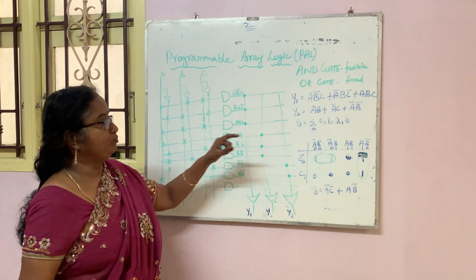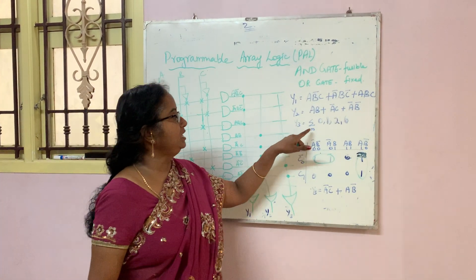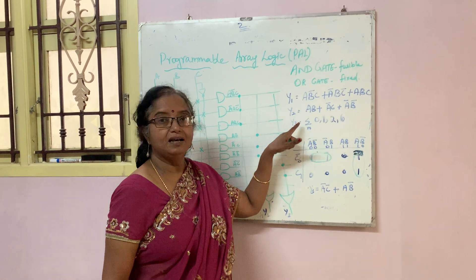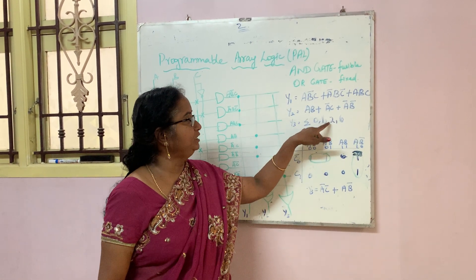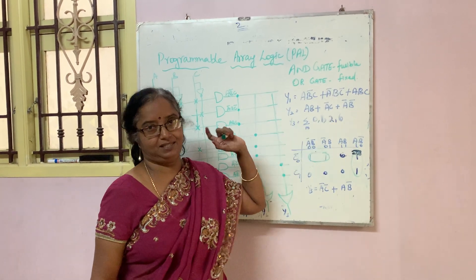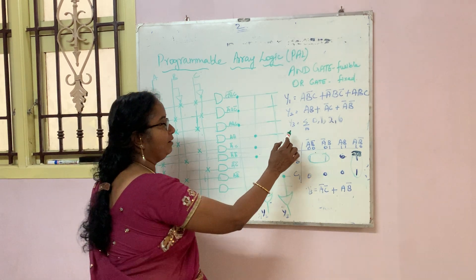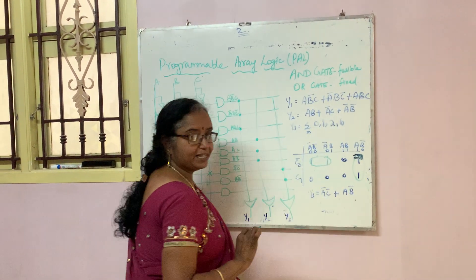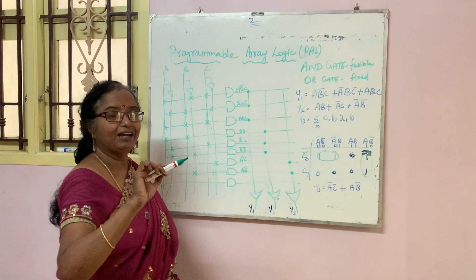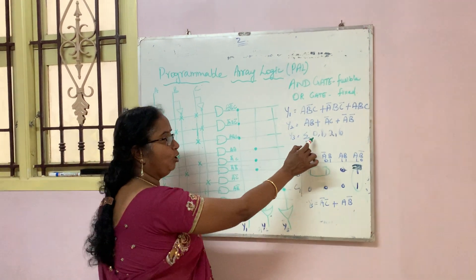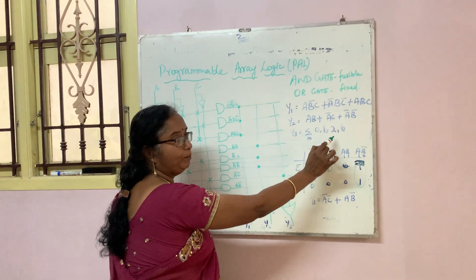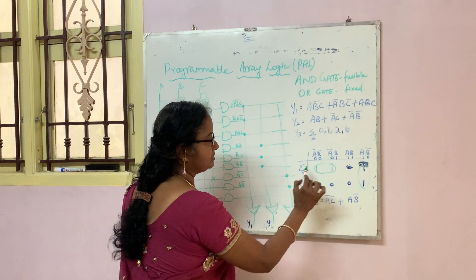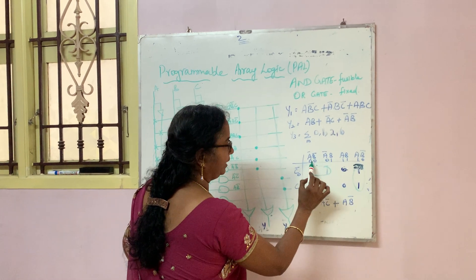Next, Y3 is equal to sigma M, that is the sum of products of minterms 0, 1, 2, 6. So this is why we are using a K-map - you have to reduce this expression. We have already talked about K-maps and you all know about K-maps. So here I have drawn the K-map diagram.